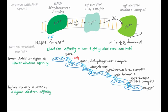A similar process happens all down the electron transport chain. At every point, electrons flow in one direction because they move toward higher electron affinity, which is lower free energy and higher stability. While the protein complexes all have iron ions in them, the interaction between the iron and the protein is different in each protein, which changes electron affinity.